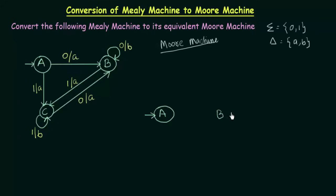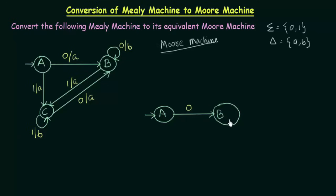Let me draw state B. State A will go to state B on input 0. But as this is a Moore Machine, we cannot associate the output to the transition — we have to associate the output to the states. It is giving an output A and going to B, so I will associate the output A to state B. The output is now associated to the state, which is the property of a Moore Machine.